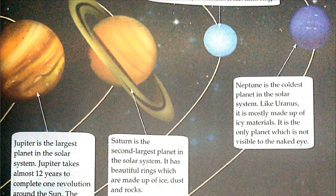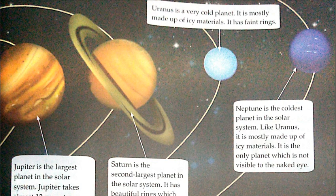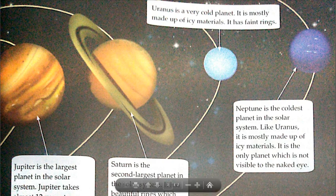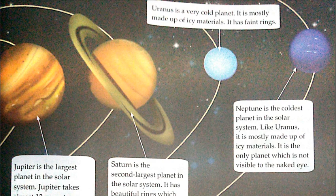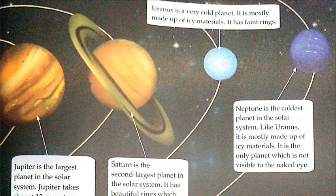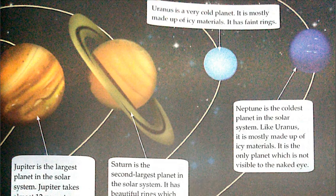Neptune is the coldest planet in the solar system, like Uranus it is mostly made up of icy material. Neptune is farther from the sun than Uranus, making it the coldest. It is the only planet not visible to the naked eye — bina kisi telescope ya equipment ke hum isse nahi dekh sakte.